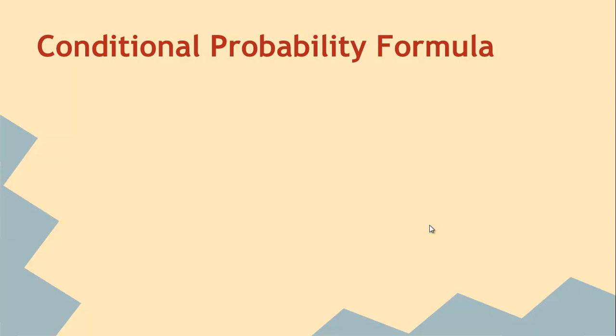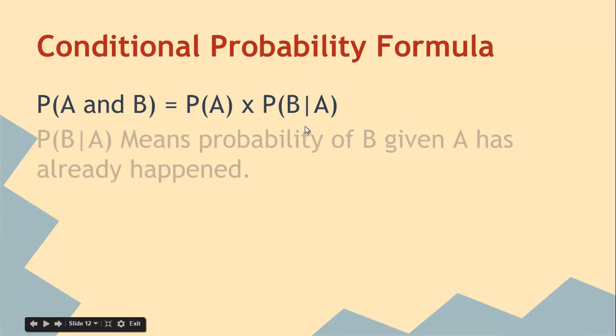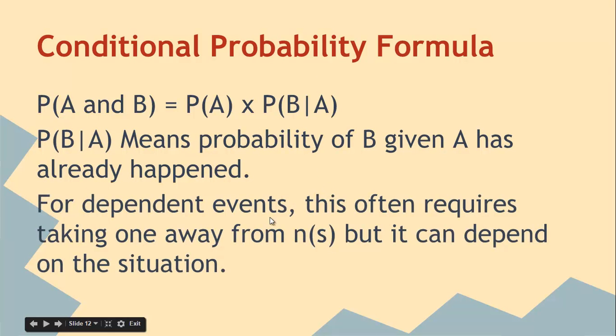Conditional probability: I don't love this formula, but I want to expose it to you. It's the probability of A and B, so the probability that two things happen is the probability that the first thing happens times the probability that the second thing happens, probability that B given A has happened. And so if you have dependent trials, then you have this idea of B given A. Dependent trials requires taking one away from N of S, but it really does depend on the situation. You might have to take one away from the numerator or N of A as well.